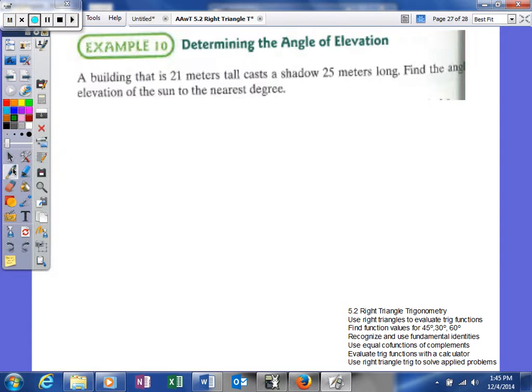Here's our next example. We're going to determine the angle of elevation. A building that is 21 meters tall casts a shadow 25 meters long. Find the angle of elevation to the sun to the nearest degree.